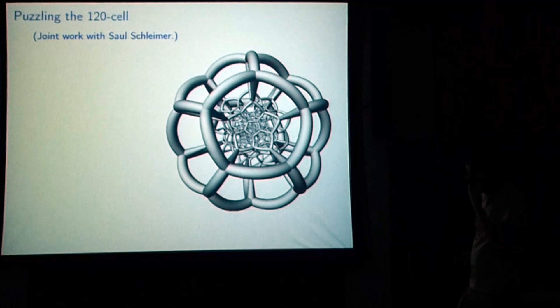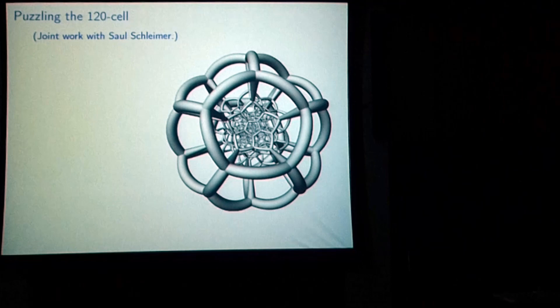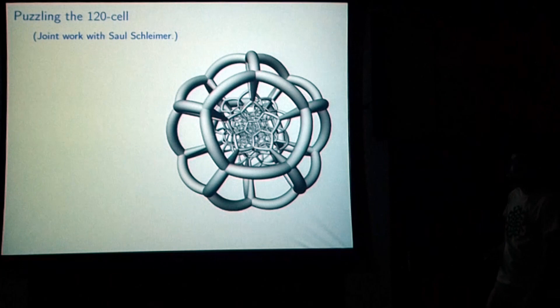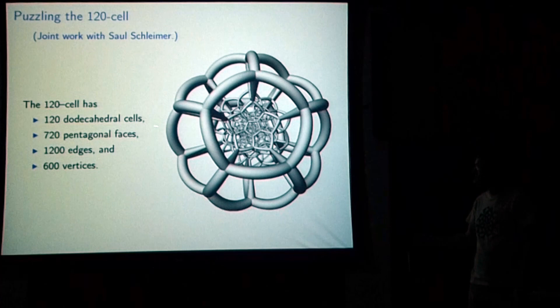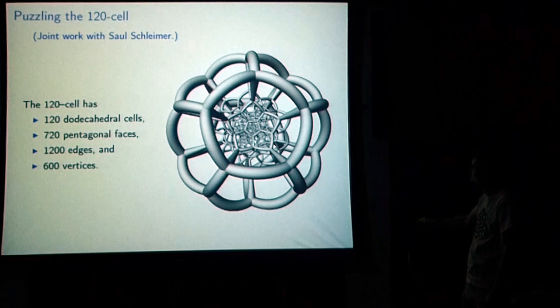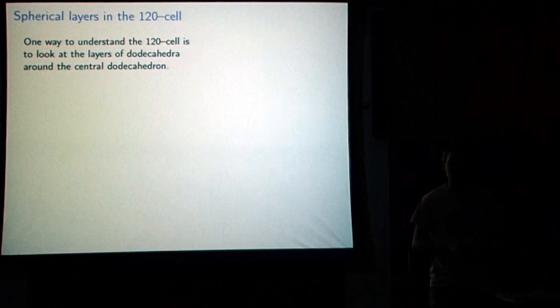For the rest of the talk, I'll discuss two different projects I've done with different people, building sculptures — in this case puzzles — based on this four-dimensional geometry. This is joint work with Saul Schleimer. We're going to look at this 120-cell and try to understand what's going on. The 120-cell has 120 dodecahedral cells. You can see one of them here on the outside: there's a pentagon, five pentagons around that, five more around that, and one in the middle.